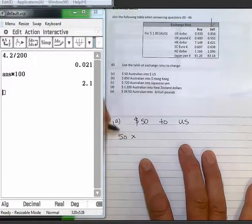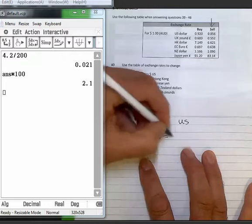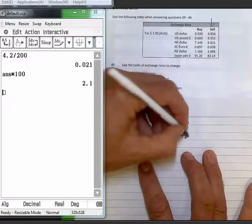So in the first instance, 50 Australian dollars times 0.8556 gives me $42.80 US dollars.